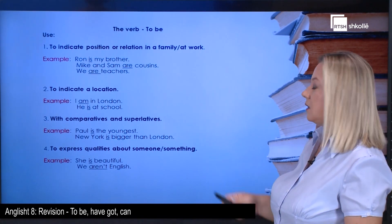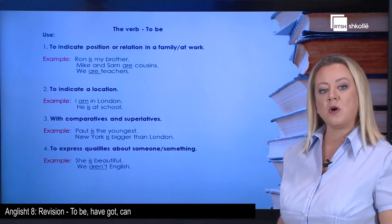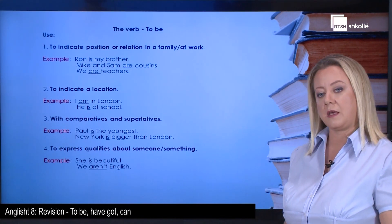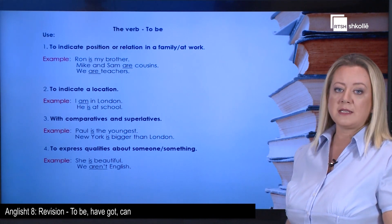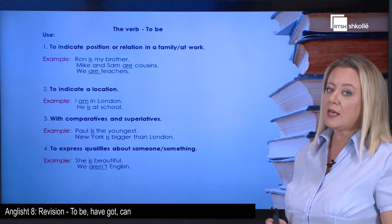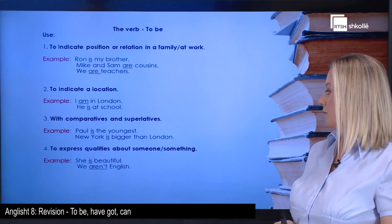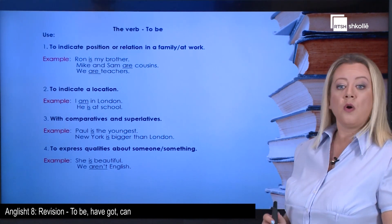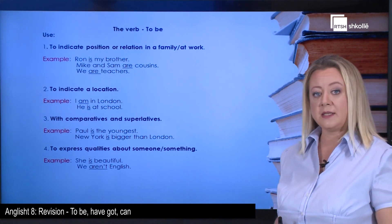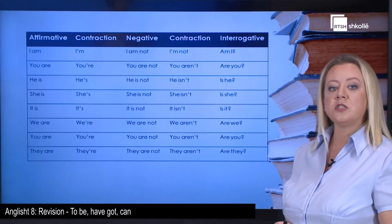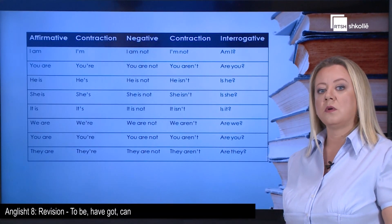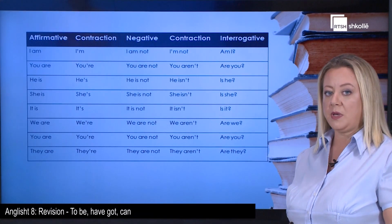The third use of the verb to be is with comparatives and superlatives. For example: Paul is the youngest, New York is bigger than London. And the fourth use is to express qualities about someone or something. For example: she is beautiful, we aren't English.